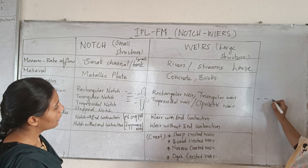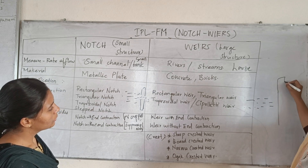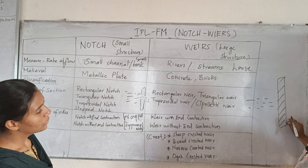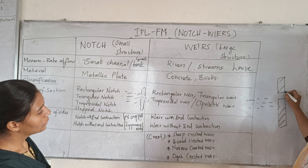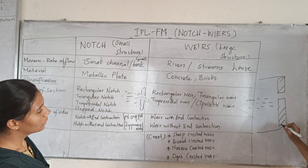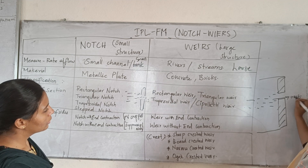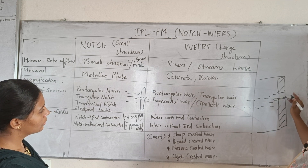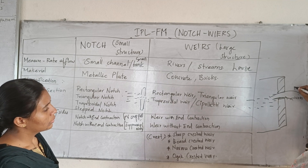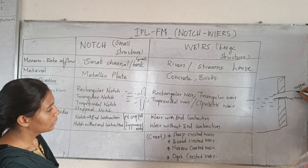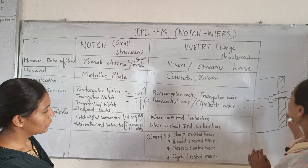The notch will have specific flow characteristics. If you have a flow, it will pass through the notch section — it is a small opening. If you look at a tank, the flow will be closed at the bottom. The bottom layer is the crest, and the lower layer is the nappe.